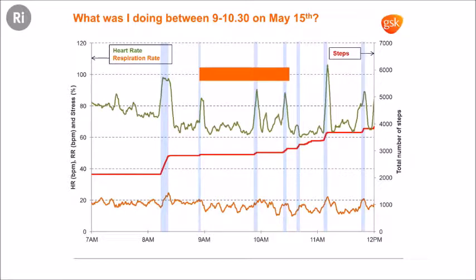I then walked, and that's the next peak in heart rate. I'm then lying down between 9 and 10:30 — that's the orange bar. And then after that I'm up and walking about again, giving the other peaks in heart rate. So the question for you is: what am I doing between 9 and 10:30 on a Monday morning, lying down, getting periodic spikes in heart rate?